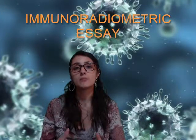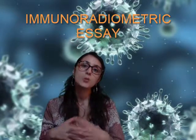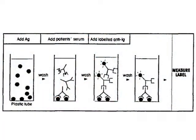In the immunoradiometric assay, we use a reaction mixture containing the viral antigens, the patient's antibodies, and additional primary antibodies that recognize the viral antigens. These added primary antibodies are bound with fluorescence molecules. There is a competition between the added primary antibodies and the patient's antibodies, so we observe as much fluorescence as the number of antibodies the patient has. That's all for now — I'll see you in the next lesson.